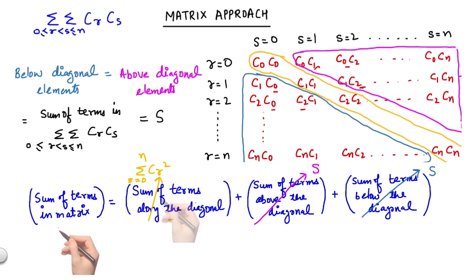While for the sum of all the terms in the matrix, this can be written as double summation CR CS, R varying from 0 to n, S varying from 0 to n, basically the disconnected sigma that we talked about earlier.